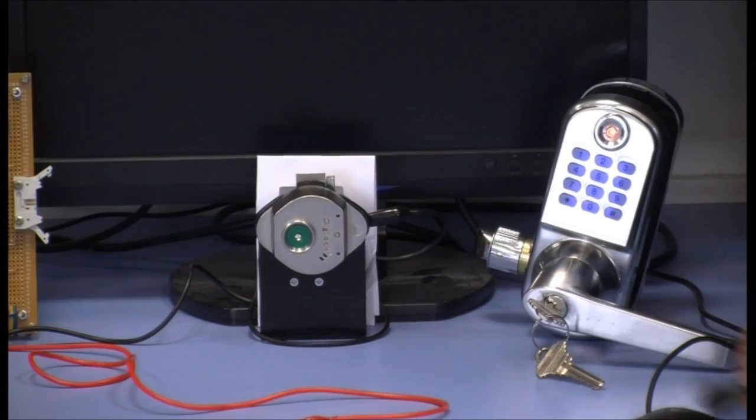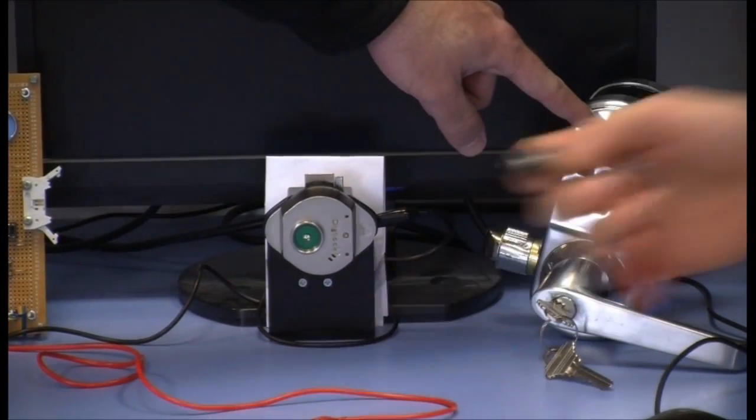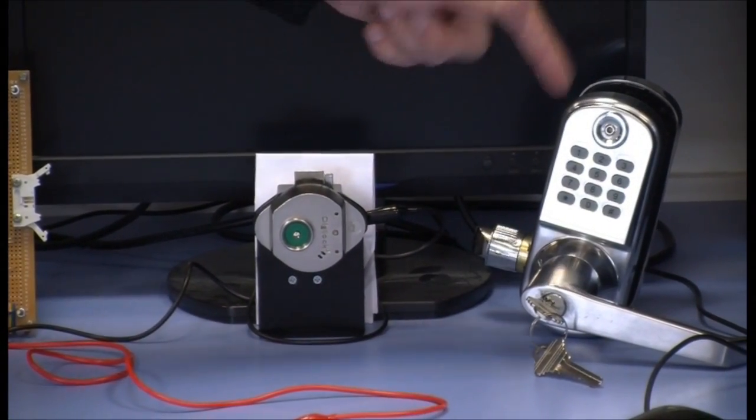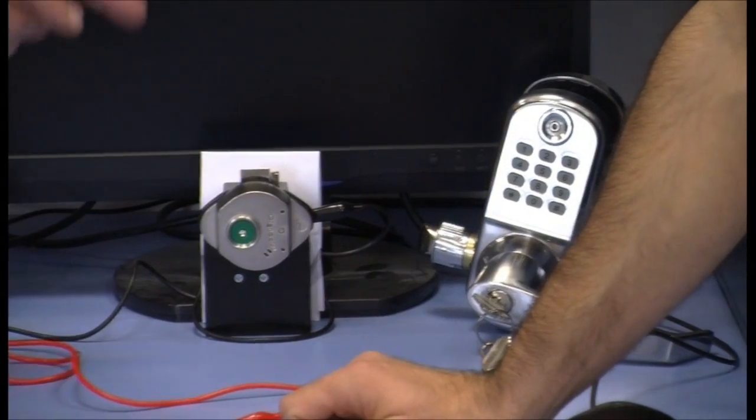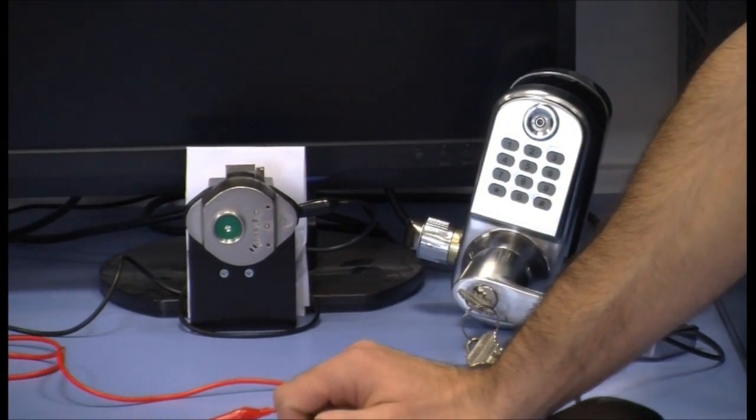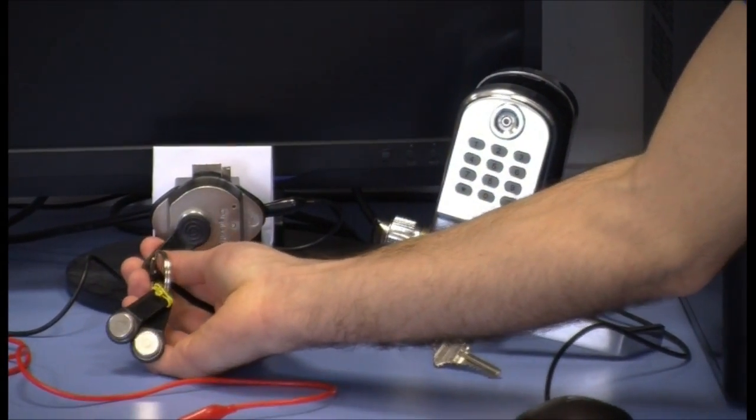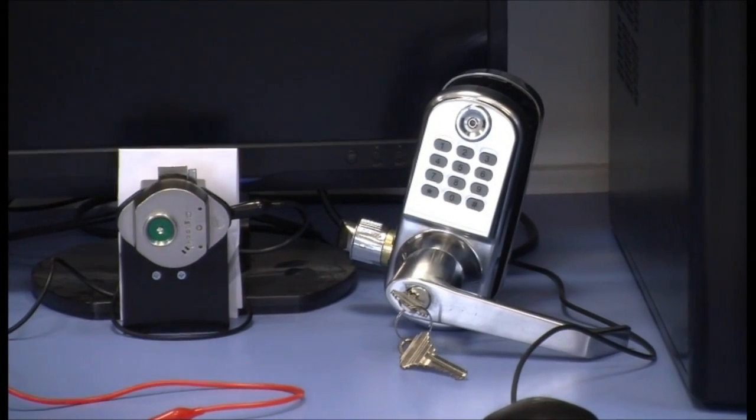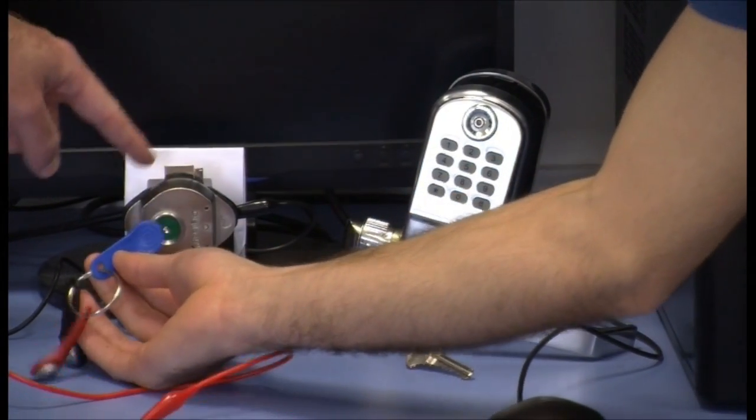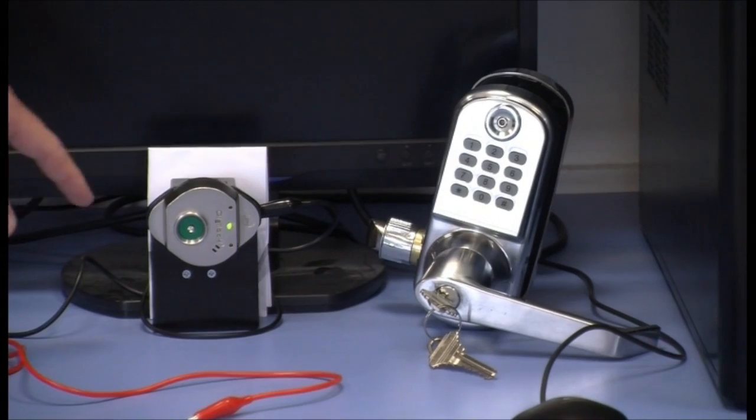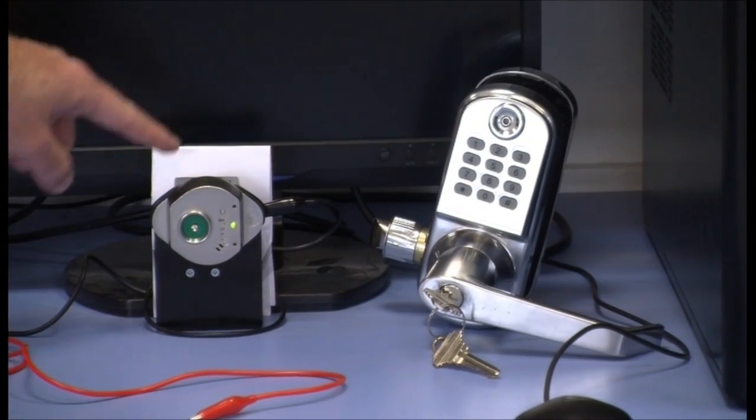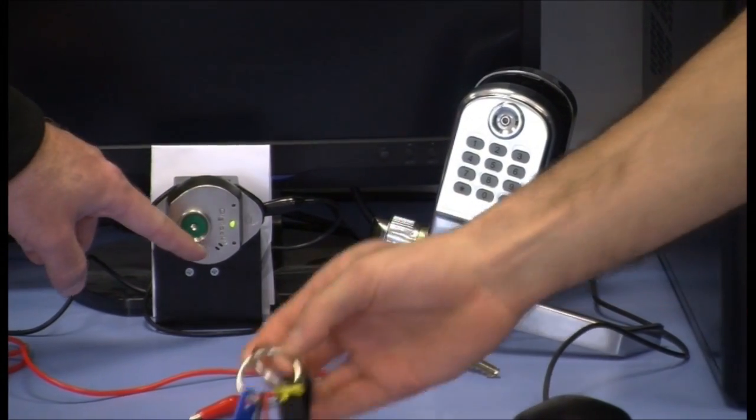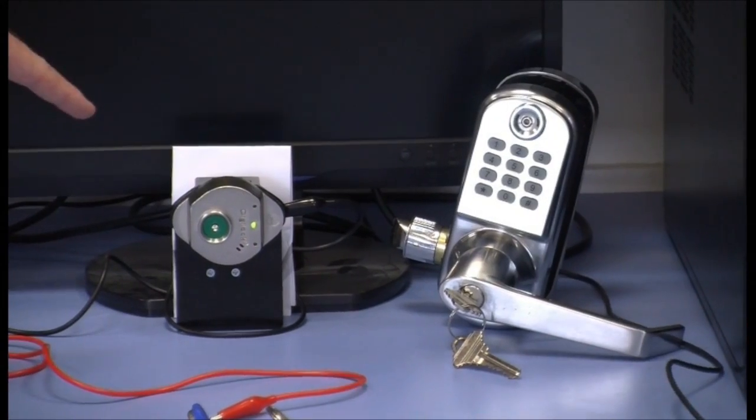When we put the incorrect key we see the red LED and of course the deadbolt is locked. And now the correct key, green LED, the deadbolt is open and also a beeping sound.